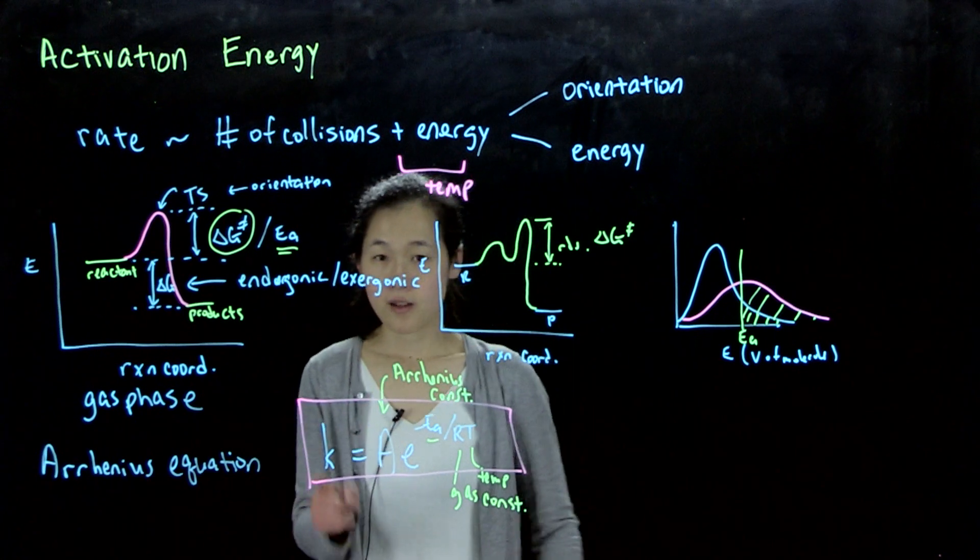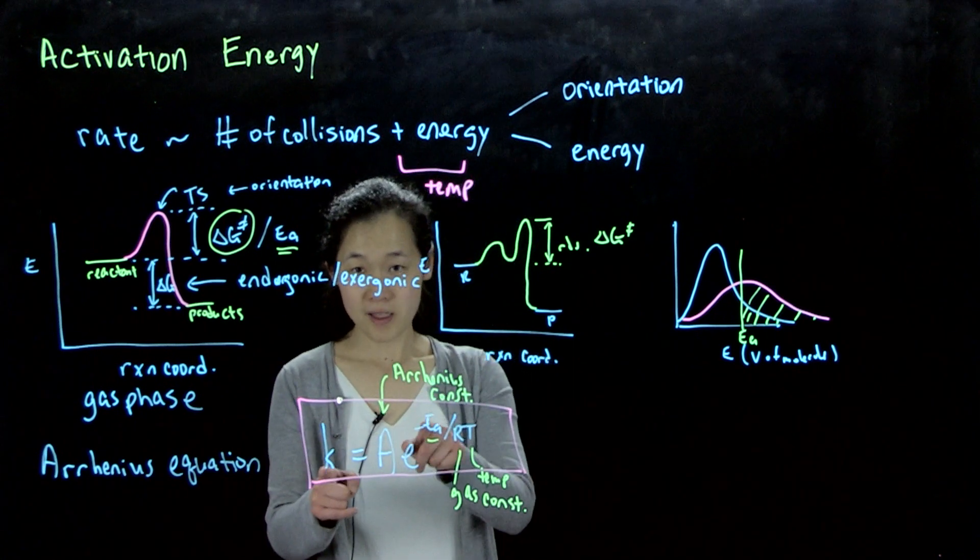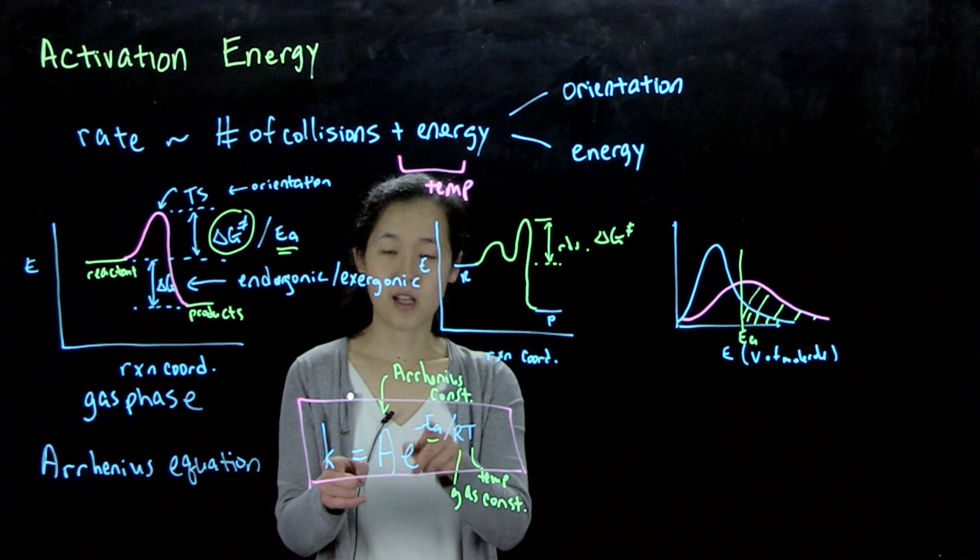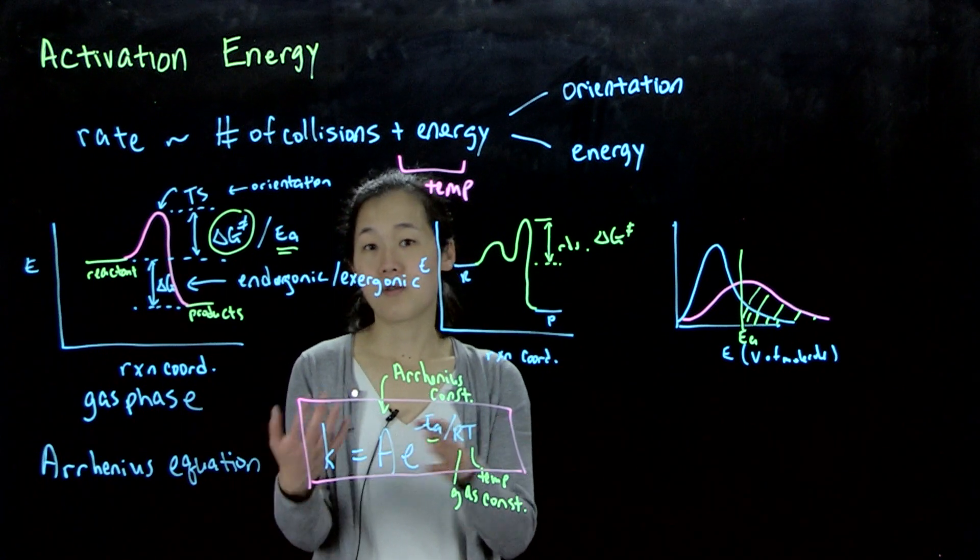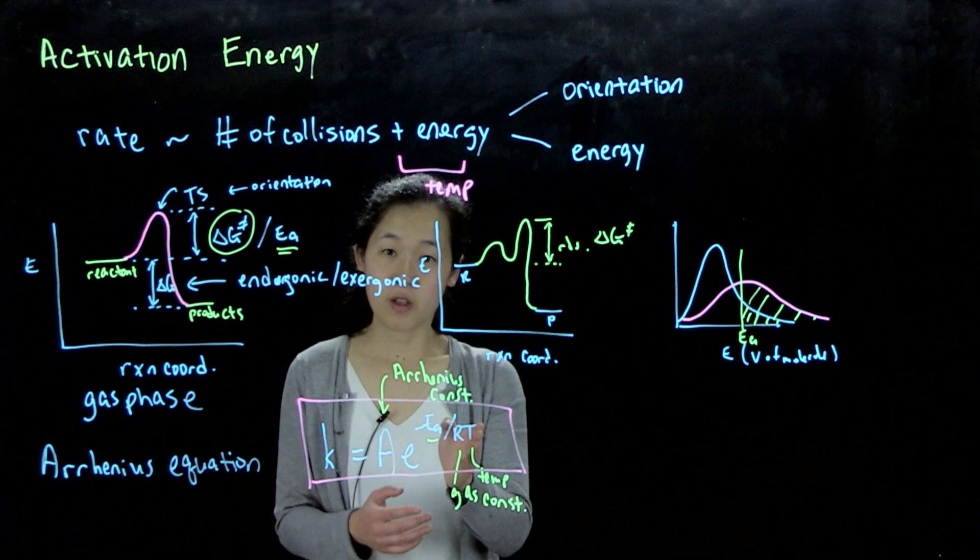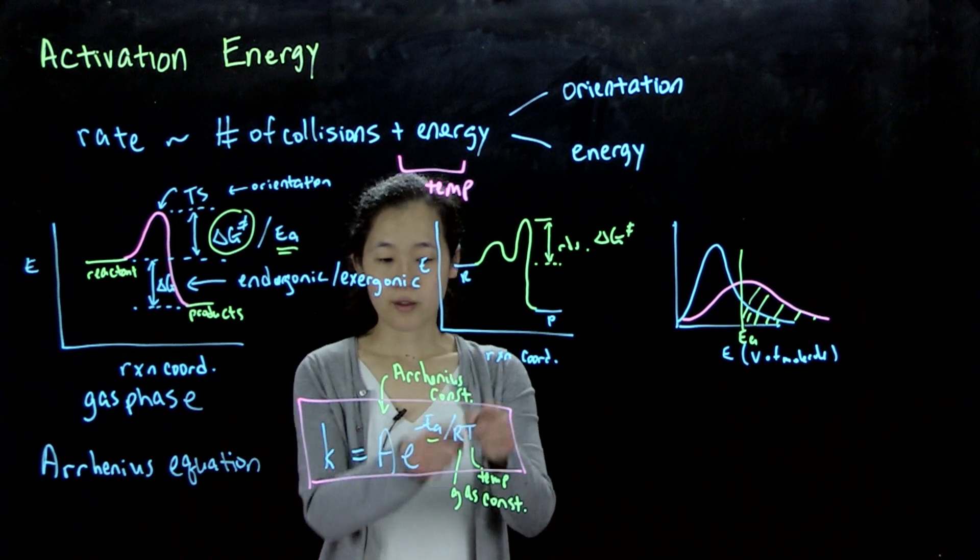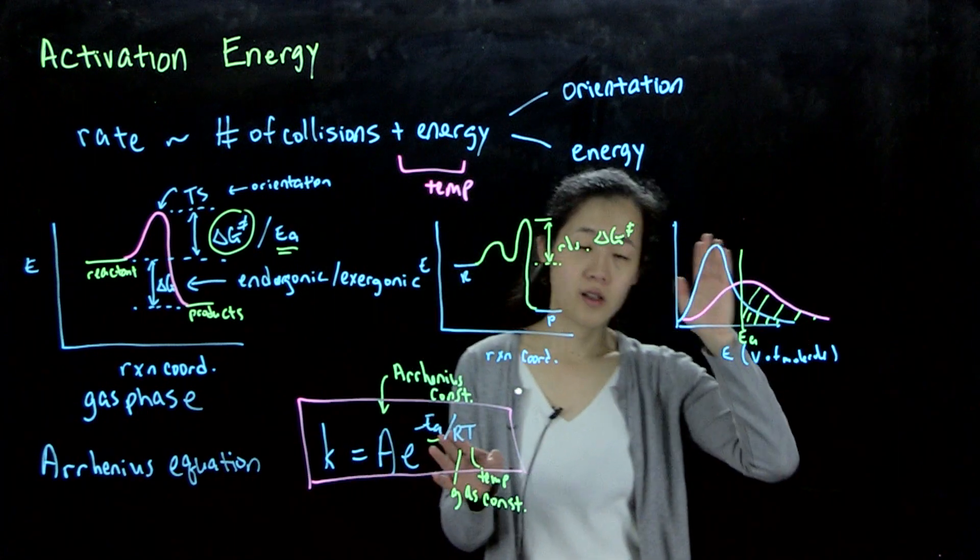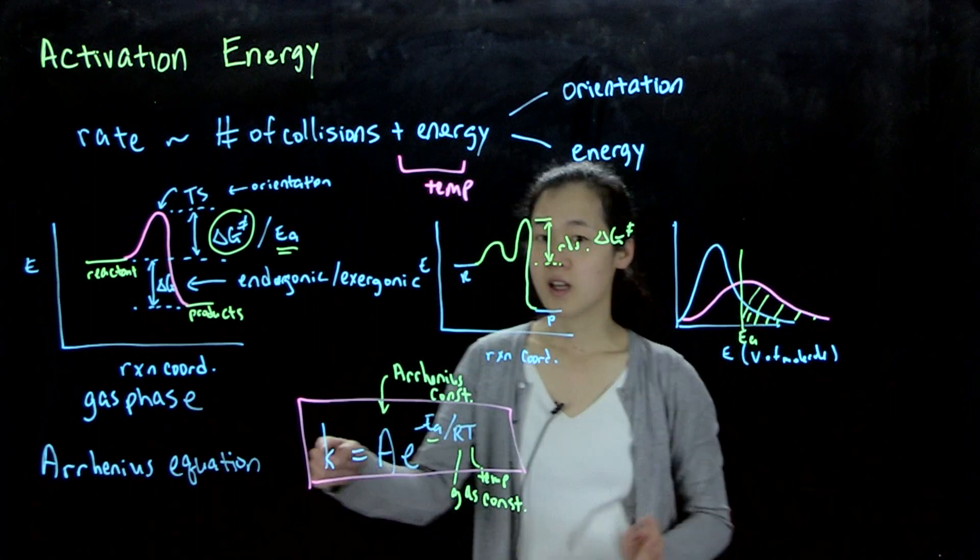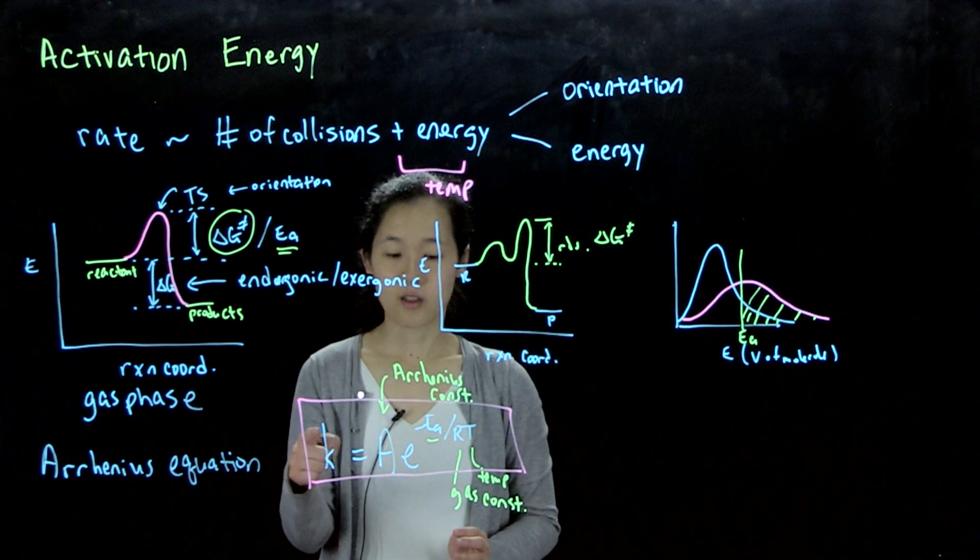So this lets us relate rate constant to activation energy. So that's really critical. And so it tells us at every temperature what our reaction rate should be. So presumably, as we increase the temperature, then our proportion of molecules with energy higher than activation energy will increase. Therefore, our rate constant should increase also.